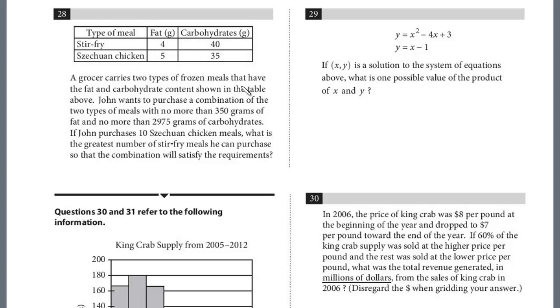A grocer carries two types of frozen meals that have the fat and carbohydrate content shown in the table above. John wants to purchase a combination of the two types of meals with no more than 350 grams of fat and no more than 2,975 grams of carbohydrates. If John purchases 10 Szechuan chicken meals, what's the greatest number of stir-fry meals he can purchase so the combination will satisfy the requirements? We see this phrase, this is a common inequality phrase—no more. No more means it can't exceed that value, so that's less than or equal. We have to make sure he stays within these constraints, and we're told he initially purchases 10 Szechuan meals.